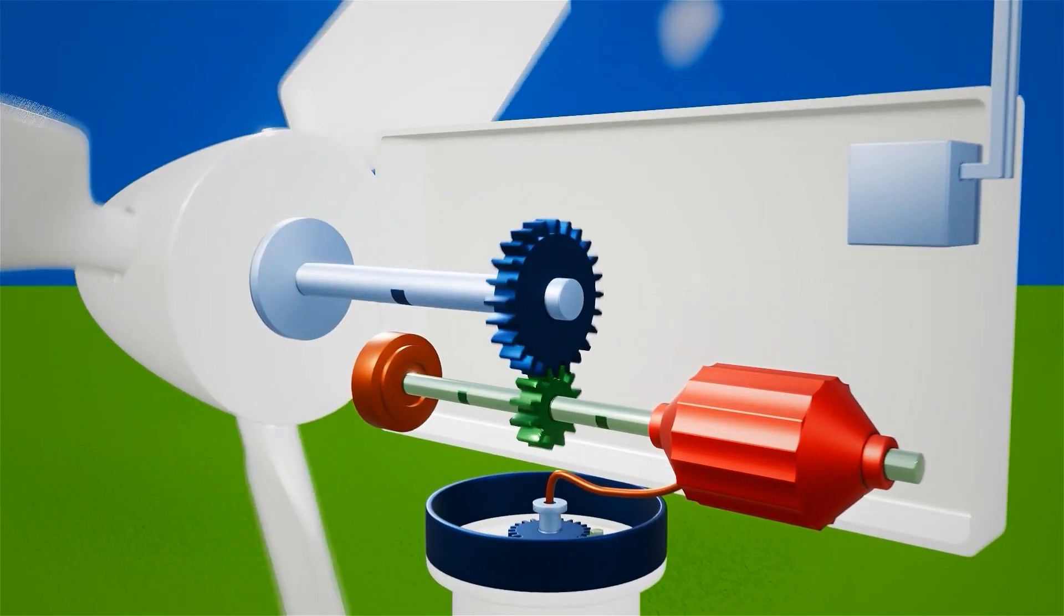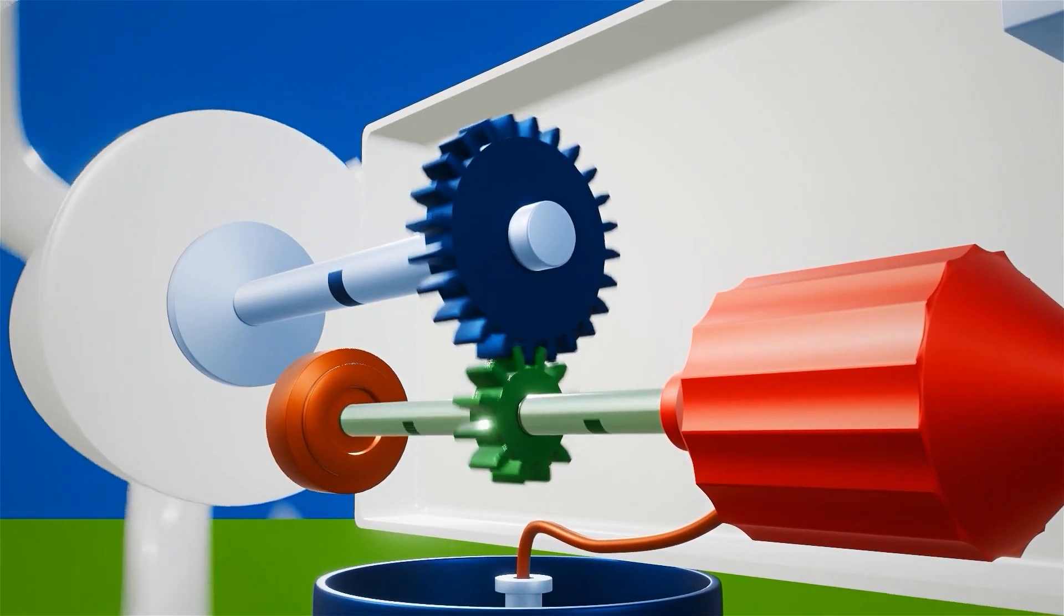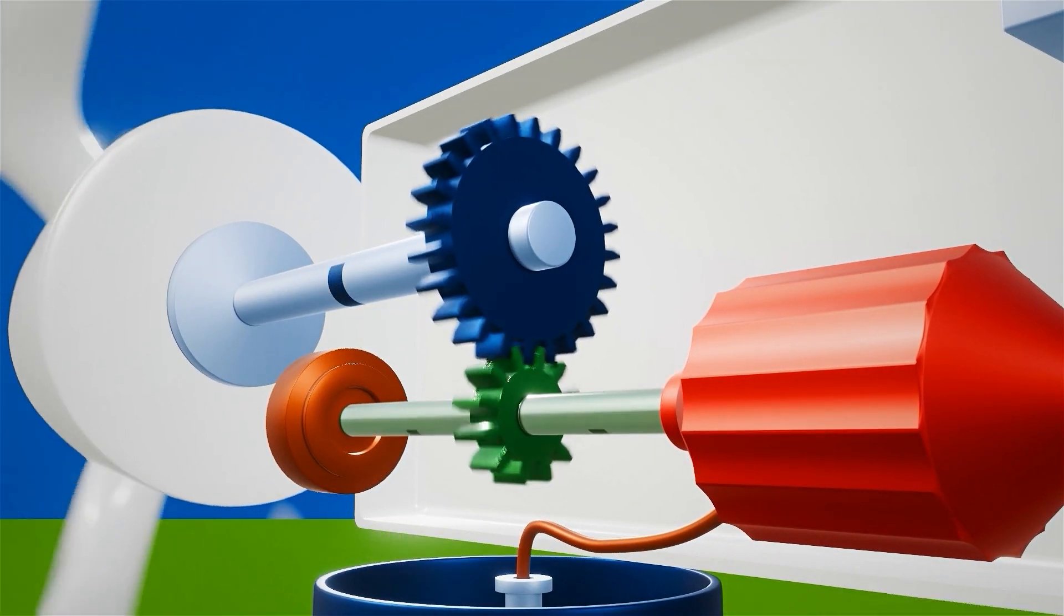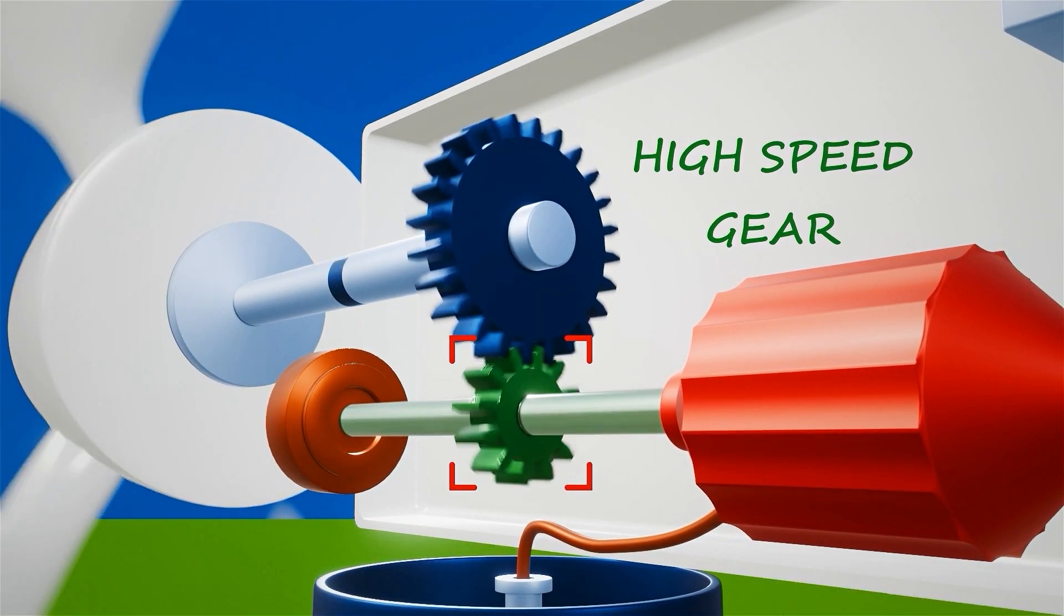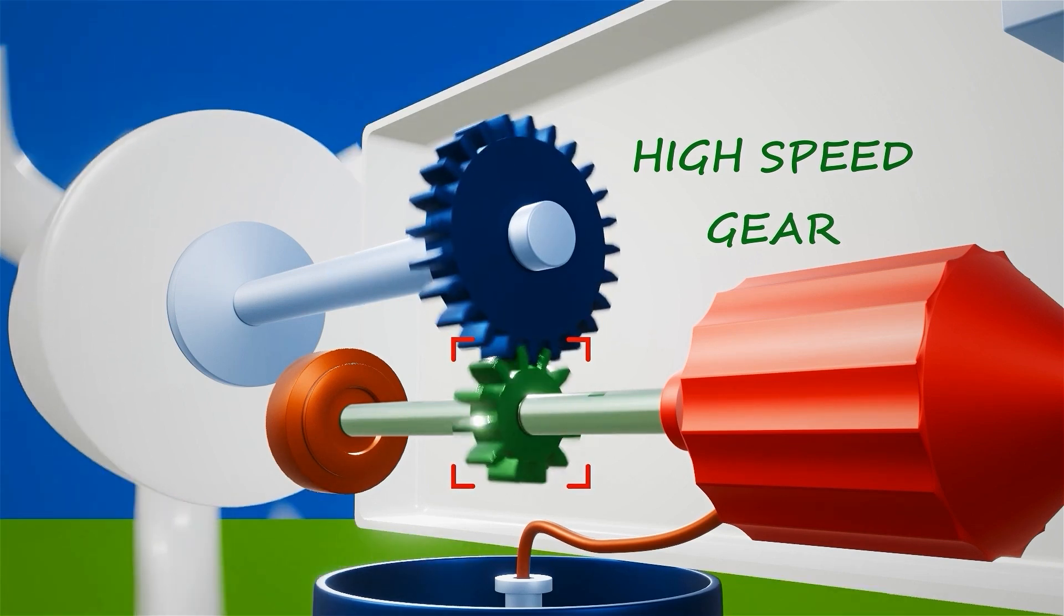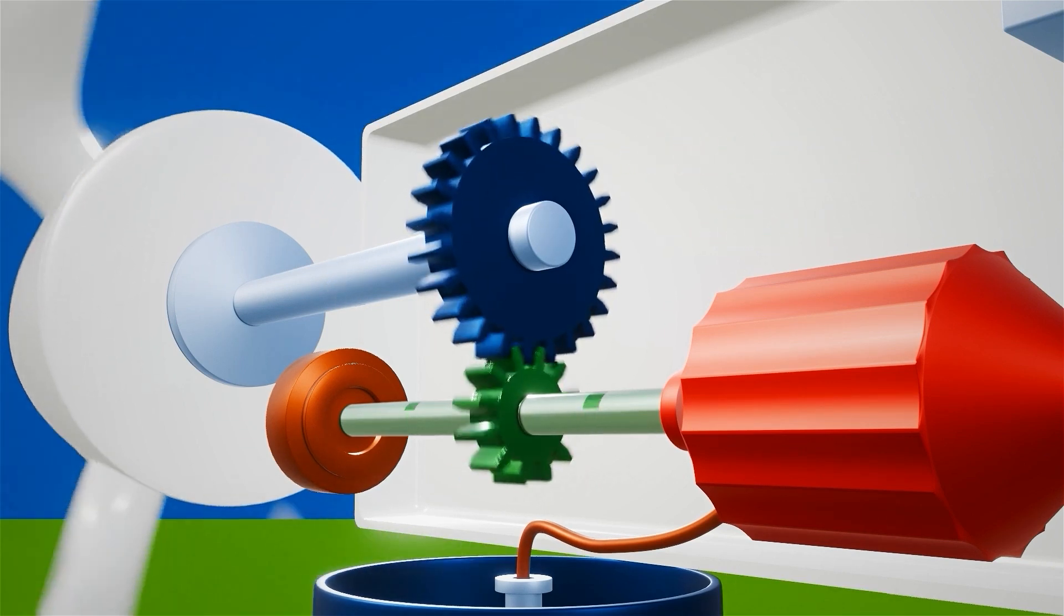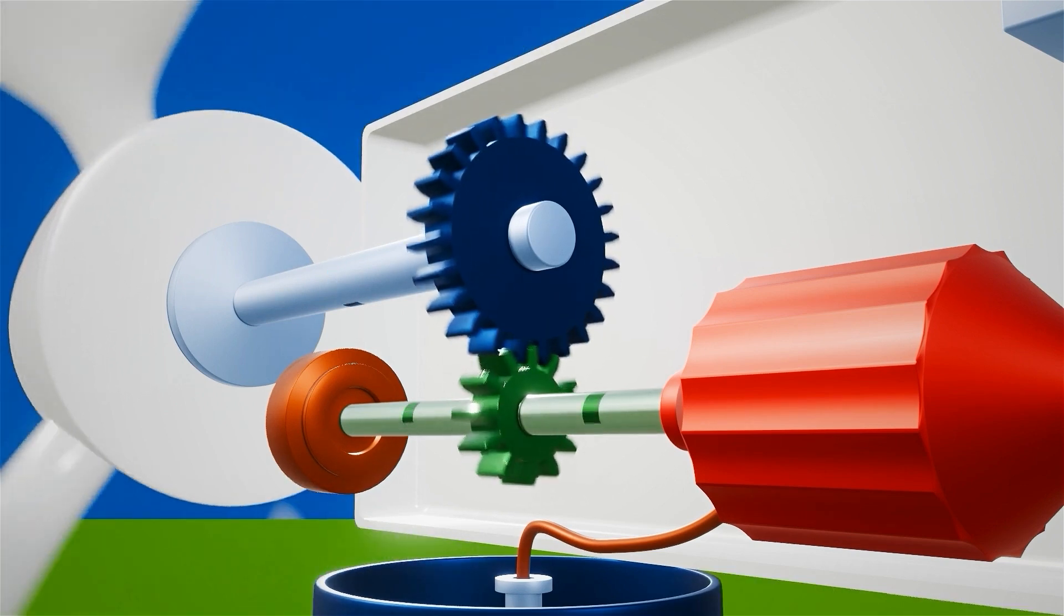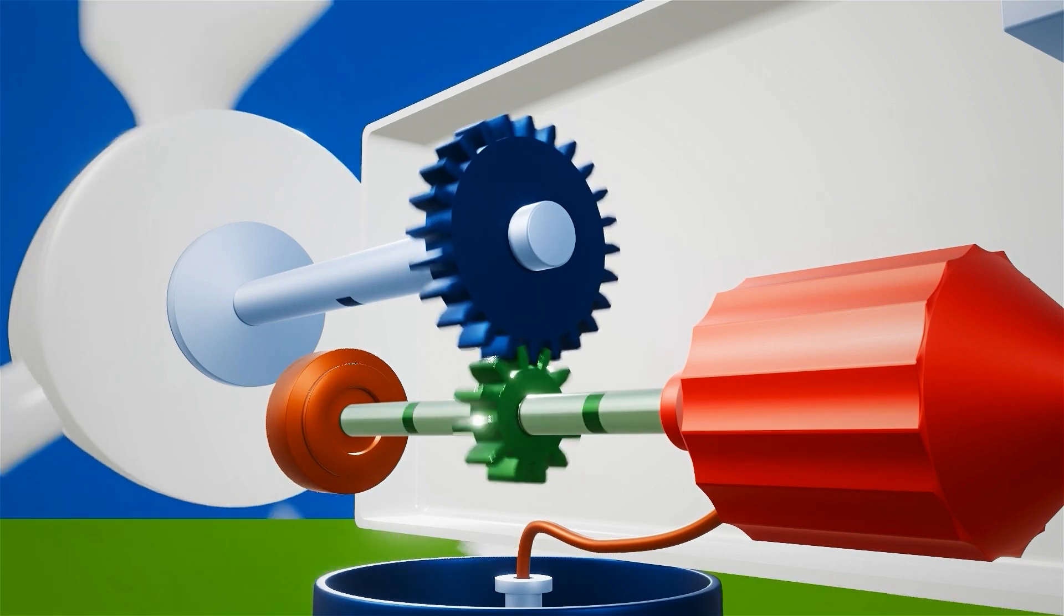To increase this speed, another gear within the gearbox comes into play. This gear, known as the high-speed gear, is turned by the rotation of the low-speed gear. The high-speed gear has fewer teeth than the low-speed gear, enabling it to rotate faster.